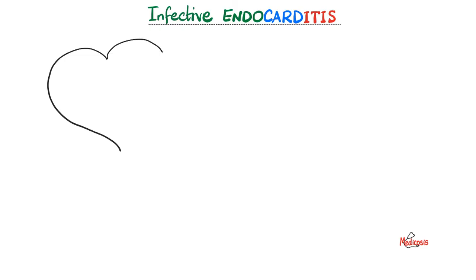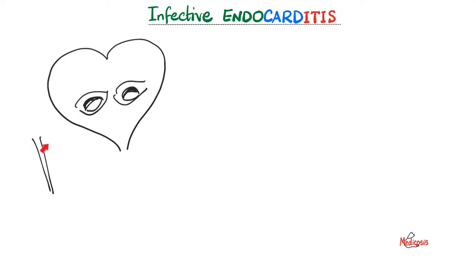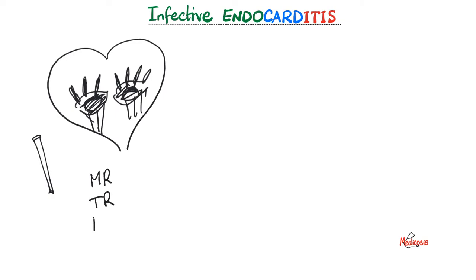Here is infective endocarditis. Here is my heart — the endocardium has the valves. It could be a healthy valve or a previously damaged valve. Risk factors include being immunocompromised, having a dental procedure with poor dentition and poor oral hygiene, a prosthetic valve, or an indwelling catheter — intravenous or urinary. All of these are sources of bacterial invasion of the blood. The bacteria are now on my valves, causing vegetations containing pathogens, platelets, and fibrin. They damage the valve leaflets and chordae tendineae until I end up with regurgitation murmurs — mitral, tricuspid, or aortic regurgitation. This gives me a new regurgitation murmur.